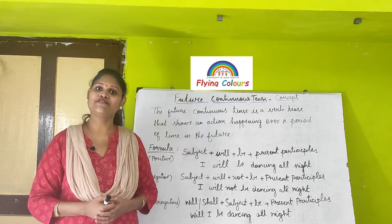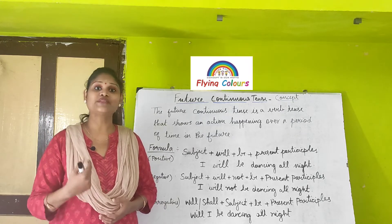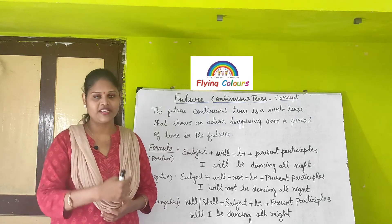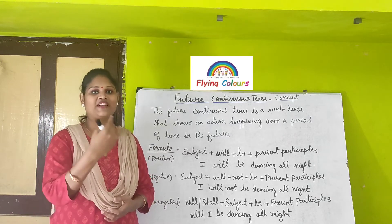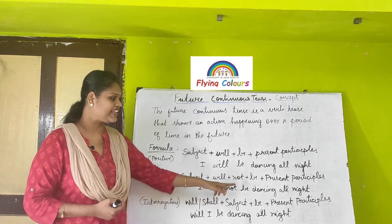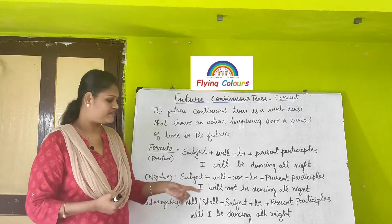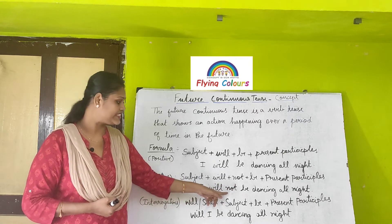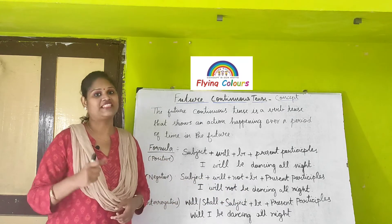The formula for negative sentences in future continuous tense is: subject plus will plus not plus be plus present participle. For example, 'I will not be dancing all night.' Here, 'I' is the subject, 'will' is the helping verb, 'not' is the negative, 'be' is from the formula, and 'dancing' is the present participle.